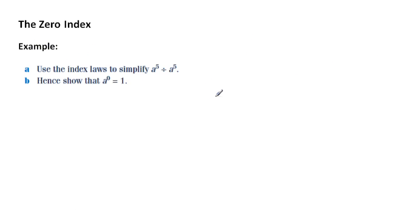In this lesson we're going to have a look at the special case when there is a zero as an index number. We'll go through this process and you'll see how it works. Use the index laws to simplify a to the five divided by a to the five.